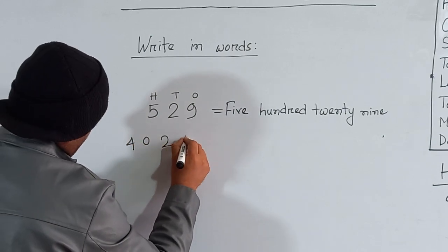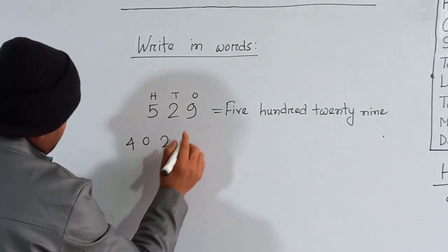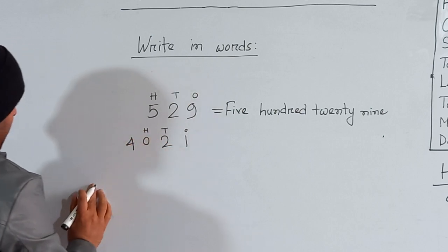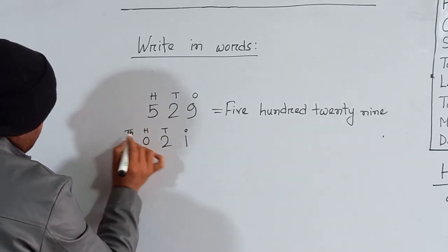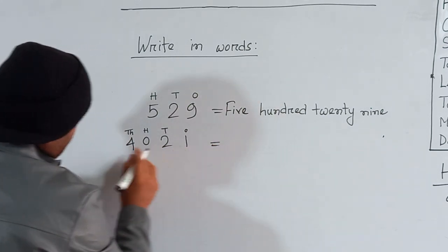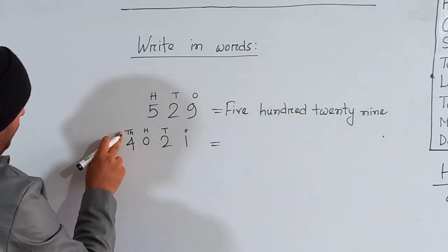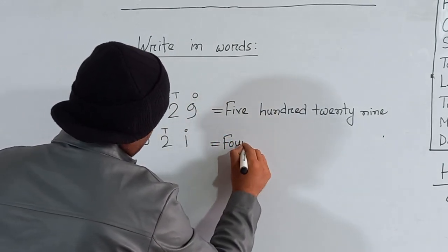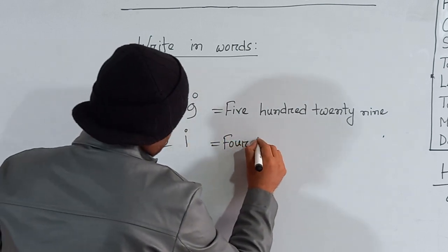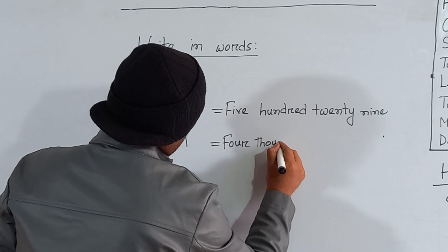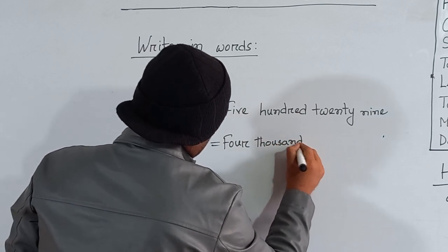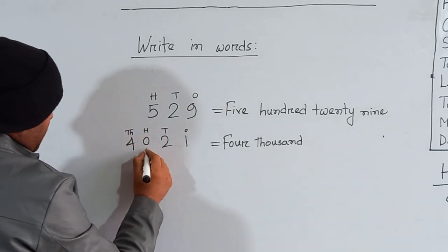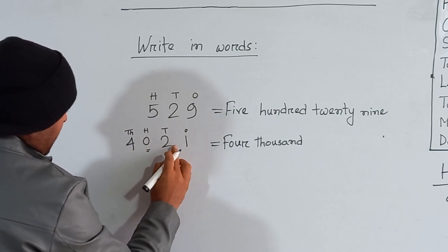Now look here. If I write 4-0-2-1, then here is 1 in the ones place, 2 in the tens place, 0 in the hundreds place, and 4 in the thousands place. How many thousands are here? Four thousand. So we can write here four thousand — F-O-U-R T-H-O-U-S-A-N-D — four thousand.